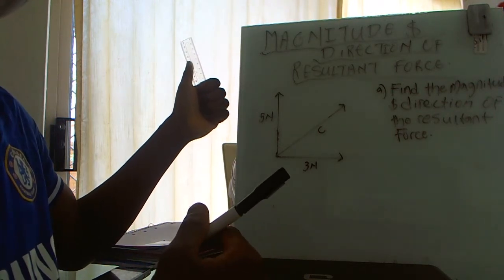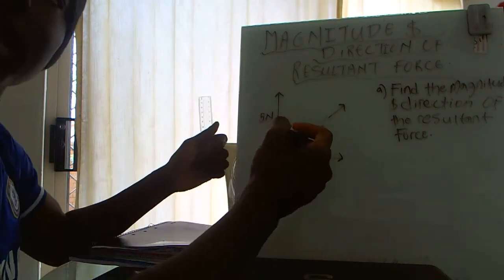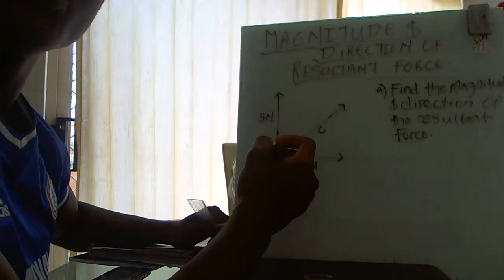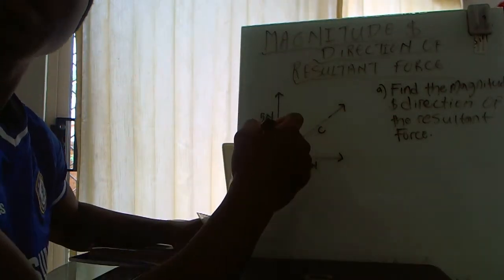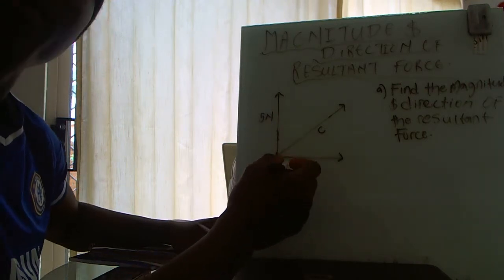Here's an example: if a force of five newtons vertically is pulling an object and a force of three newtons is pulling the object horizontally,